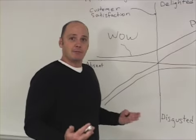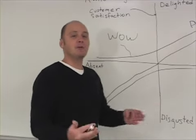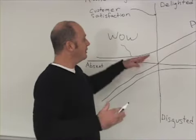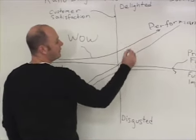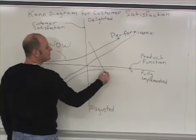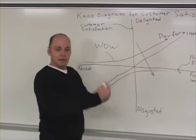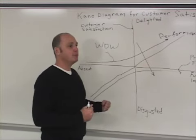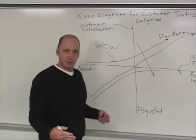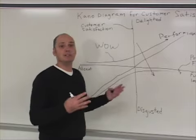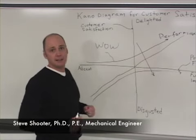What happens over time is that the competition starts to look at these things, and competitors say, 'We're going to come out with 21 speeds too.' So this tends to be a moving target. What happens over time is that wow characteristics become performance characteristics and then become basic characteristics. When 21 speeds had been out a while, if you didn't have 21 speeds, no one would even consider your bike. These days they're up to about 27 speeds, because they keep moving that wow characteristic out.